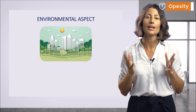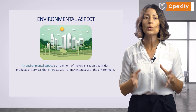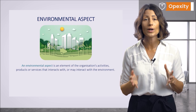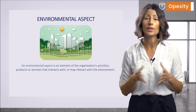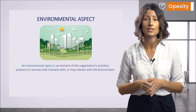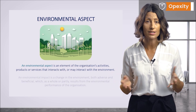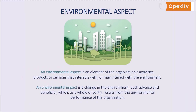What is an environmental aspect? This is an element of the organization's activities, products or services that interacts with, or may interact with, the environment — so it may have an impact on the environment. What is an environmental impact? This is a change in the environment, both adverse and beneficial, which as a whole or partly results from the environmental performance of the organization.